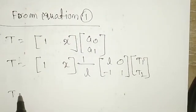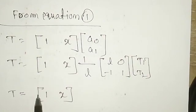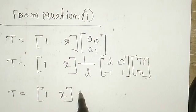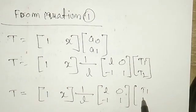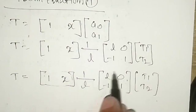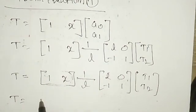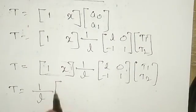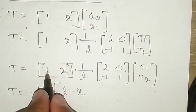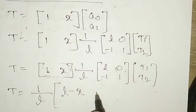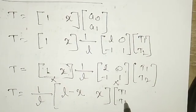Now we simplify by multiplying [1, x] with (1/L) times [L, 0; −1, 1]. The row-column multiplication gives: 1 times L plus x times (−1) equals L minus x, and 1 times 0 plus x times 1 equals x. So T equals (1/L) times [L−x, x] times [T1; T2].